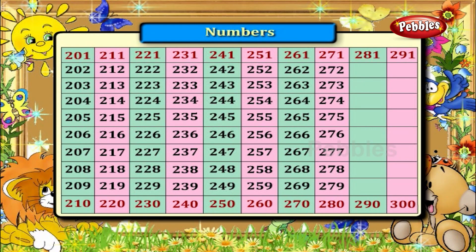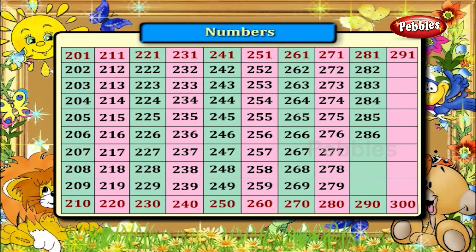Numbers between 281 and 290. They are 282, 283, 284, 285, 286, 287, 288 and 289.